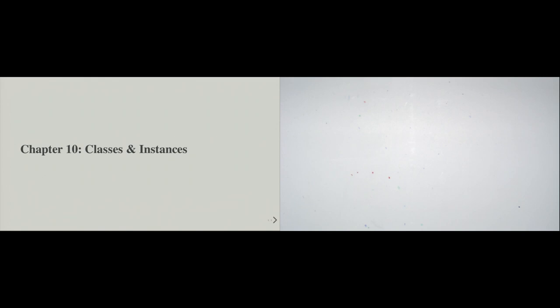Welcome to Chapter 10 of the Introduction to Python and Programming course. This chapter finally talks about object orientation — in particular, classes and instances. These are technical terms that belong to the bigger paradigm of object orientation. Throughout the first nine chapters, we have seen many things in Python that also belong to object orientation, because Python is, of course, an object-oriented language and anything follows this paradigm.